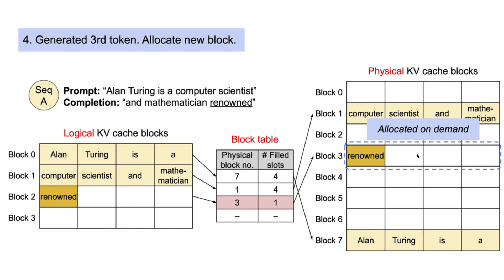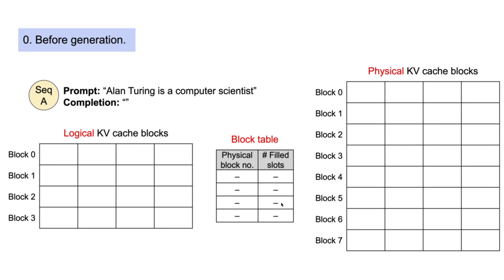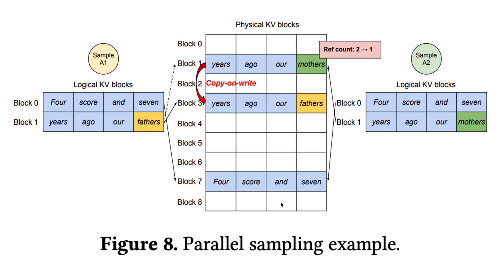At the second decoding step, as the last logical block is already filled, vLLM stores the newly generated KV cache in a new logical block - block three. vLLM allocates a new physical block three and stores the mapping in the block table.